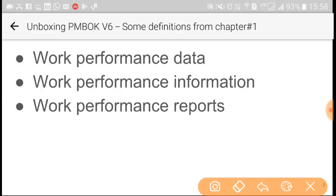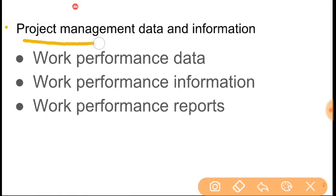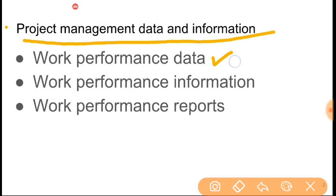When we talk about project management data, the first thing is work performance data. For example, let us take earned value. We should know the plan value — how much work we planned till today — and earned value is how much work we completed till today, and the actual cost is how much we spent to complete the work so far. These are the basic elementary things that come under work performance data.